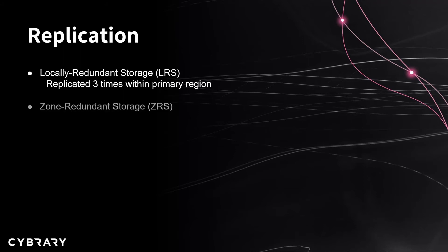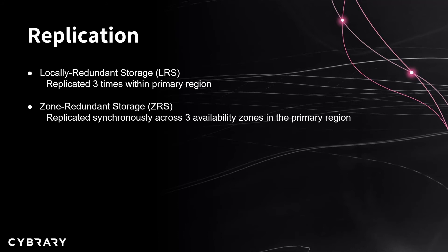Next we have zone redundant storage, or ZRS. This is where data is going to be replicated synchronously across three availability zones inside the primary region. So you're still restricted to a single region, but your data is going to be synced across an availability zone. Availability zones are autonomous and have their own separate utilities and networking features, so it can tolerate an outage inside an availability zone within the same region. However, this isn't going to protect against a regional outage when multiple zones are affected.